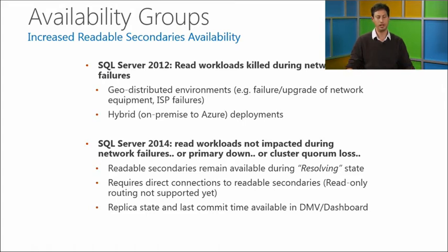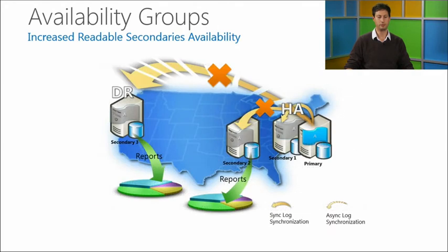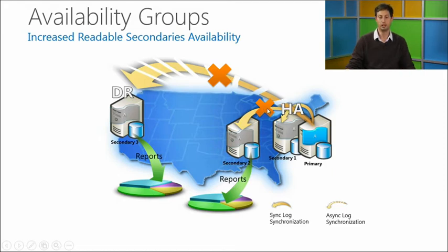We provide information about the secondary state — you can see when the replica last committed a transaction and the actual transaction sequence number it committed, so you can compare across replicas. This picture illustrates the scenario: with the same deployment as before, if you lose any connectivity between data centers, your secondary replicas are not impacted and you can continue reading from them.